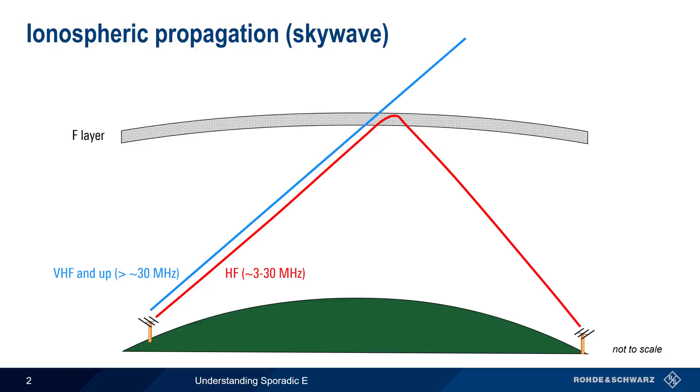Below the F layer, there is another layer of the ionosphere called the E layer, but under normal circumstances, the E layer is not capable of refracting either HF or VHF signals back towards the Earth.